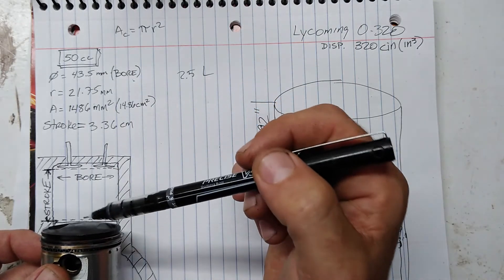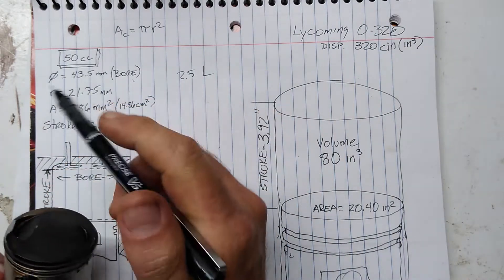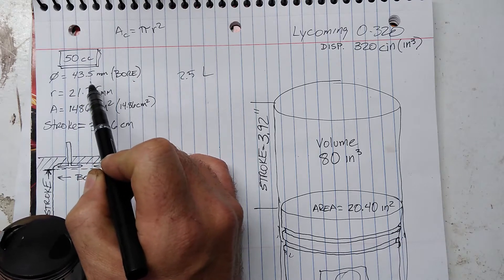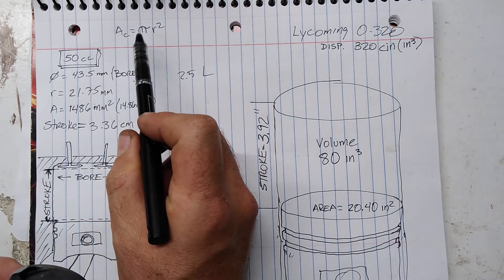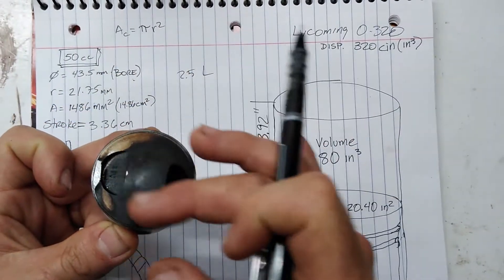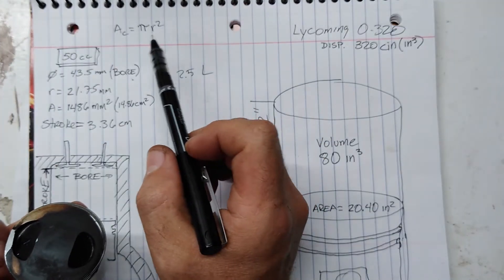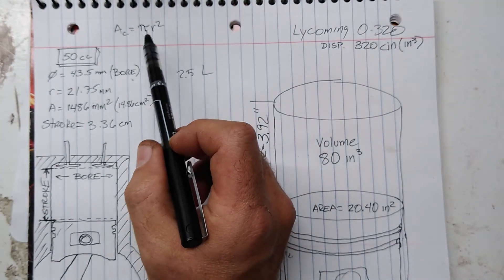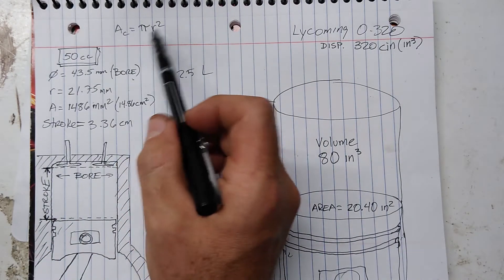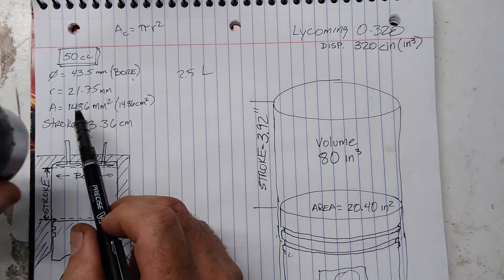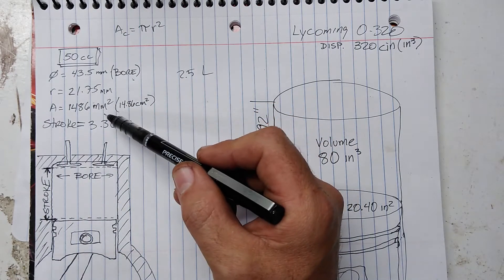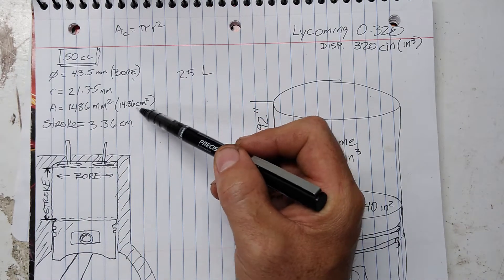In the case of this particular 50cc engine, you have a piston with a diameter of 43.5mm. The radius is half of that. The area of a circle — which is the top of the piston — uses the formula pi r squared. If you run it through the equation, you end up with an area of the piston of 1,486 square millimeters, or 14.86 centimeters squared.